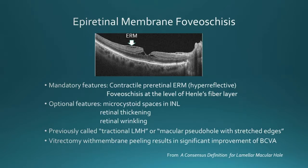The primary features are a contractile preretinal membrane, which is usually hyperreflective, with foveoschisis at the level of Henle's fiber layer. The retinal thickening is usually resulting from the traction, as well as retinal wrinkling. Most vitreoretinal surgeons agree that membrane peeling with vitrectomy results in significant improvement of vision in these cases.